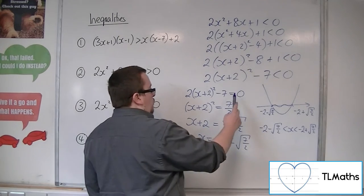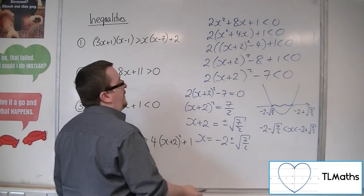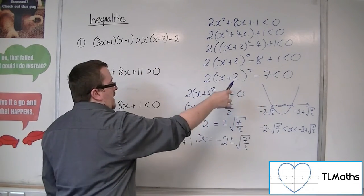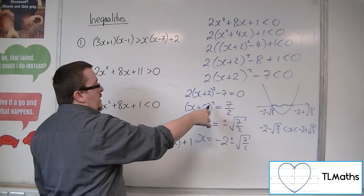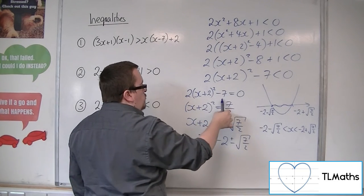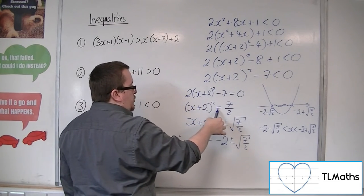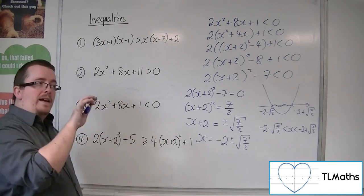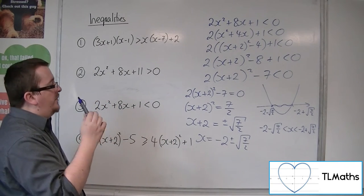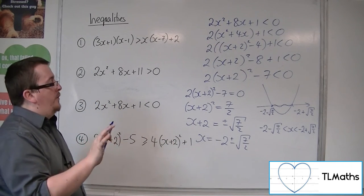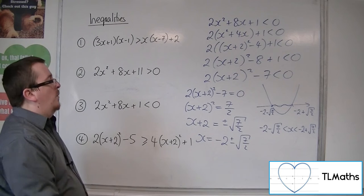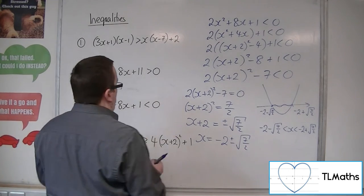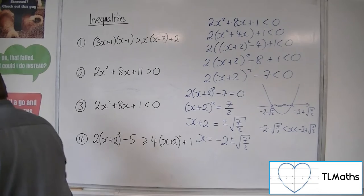Watch out for this: with that inequality, rearranging is fine up to a certain stage, but when you square root both sides, the inequality doesn't stay true. So you've got to be wary of square rooting both sides of an inequality. That's number 3.